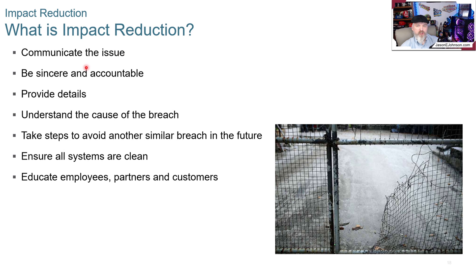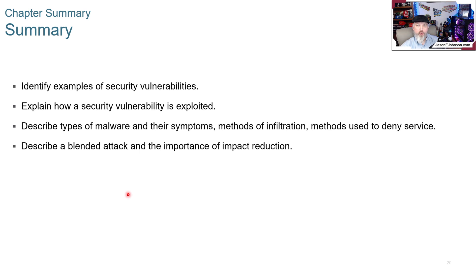Impact reduction means communicating the issue — though not all details externally at first, until vulnerabilities are fixed. Be sincere and accountable, provide all internal details, understand the cause of the breach, take steps to avoid a similar breach in the future, ensure all systems are clean and patched, and educate employees, partners, and customers on what happened and how to prevent it. Chapter 2 covered security vulnerabilities, how they're exploited, types of malware and symptoms, methods of infiltration, denial of service methods, blended attacks, and the importance of impact reduction.